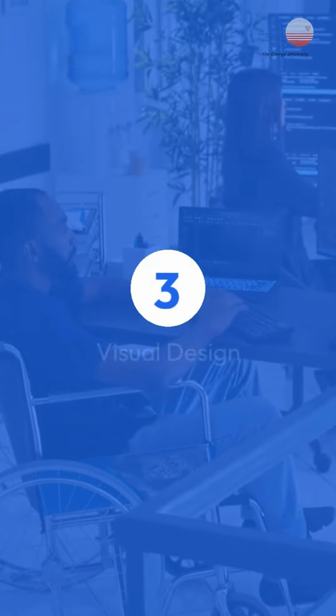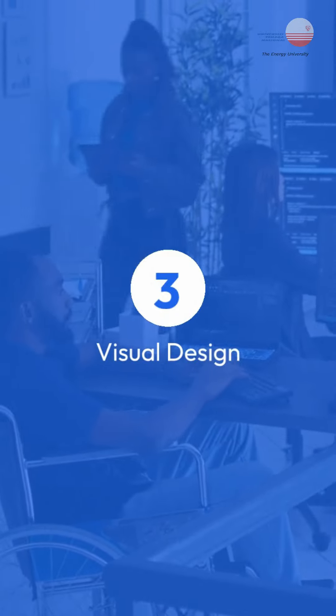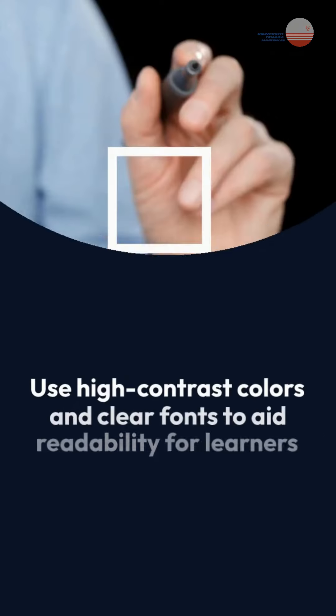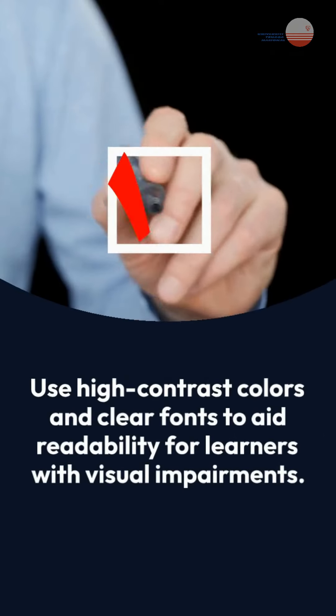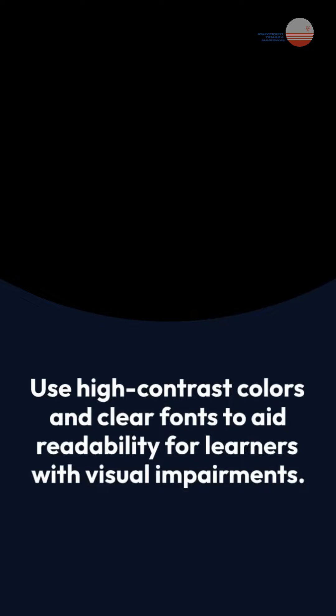3. Visual design: use high contrast colors and clear fonts to aid readability for learners with visual impairments.